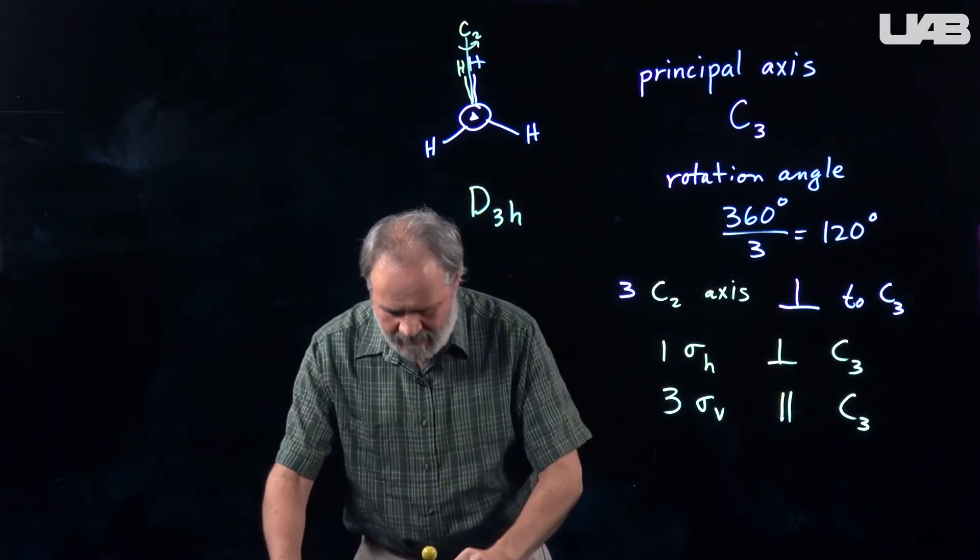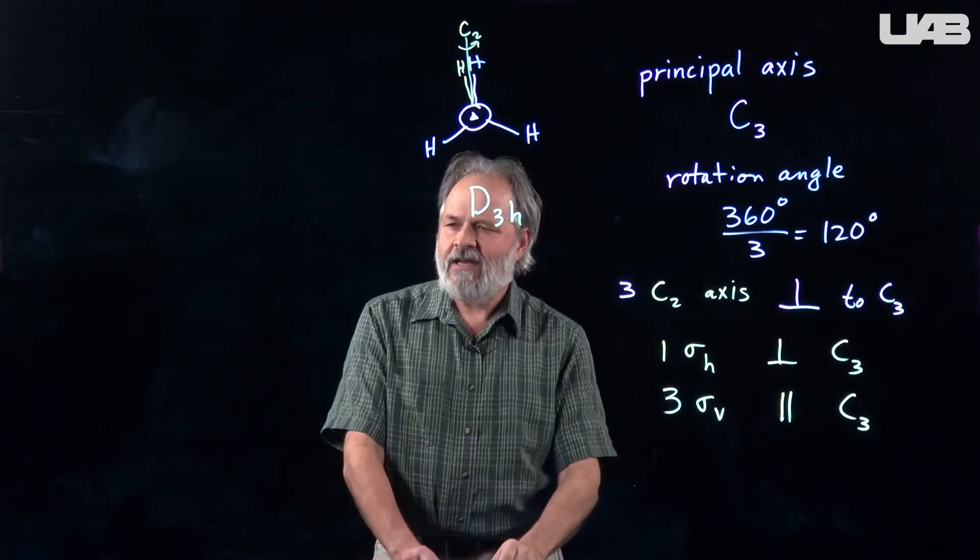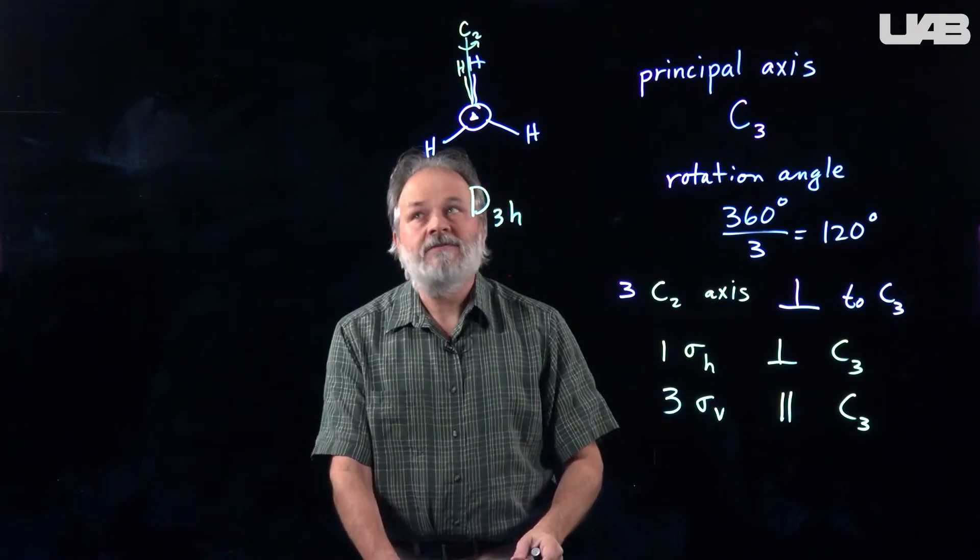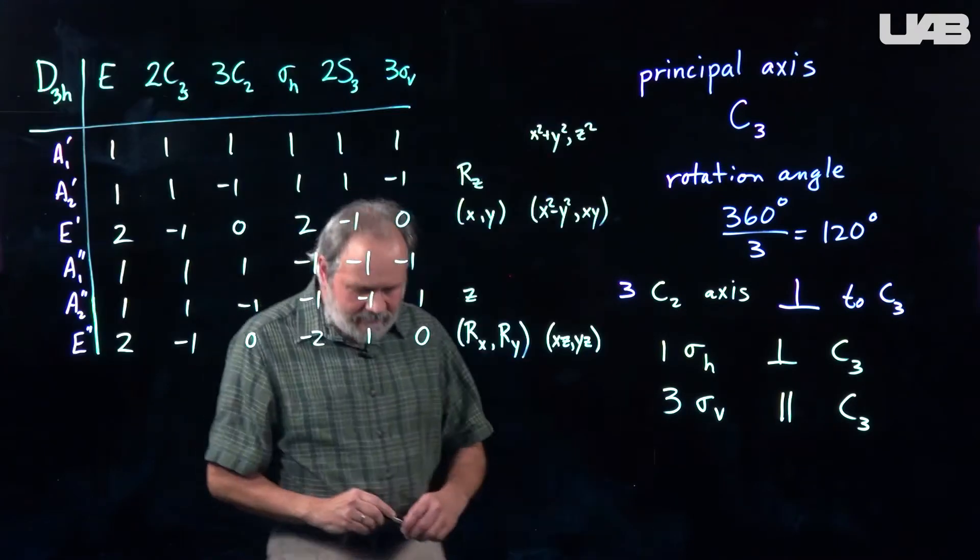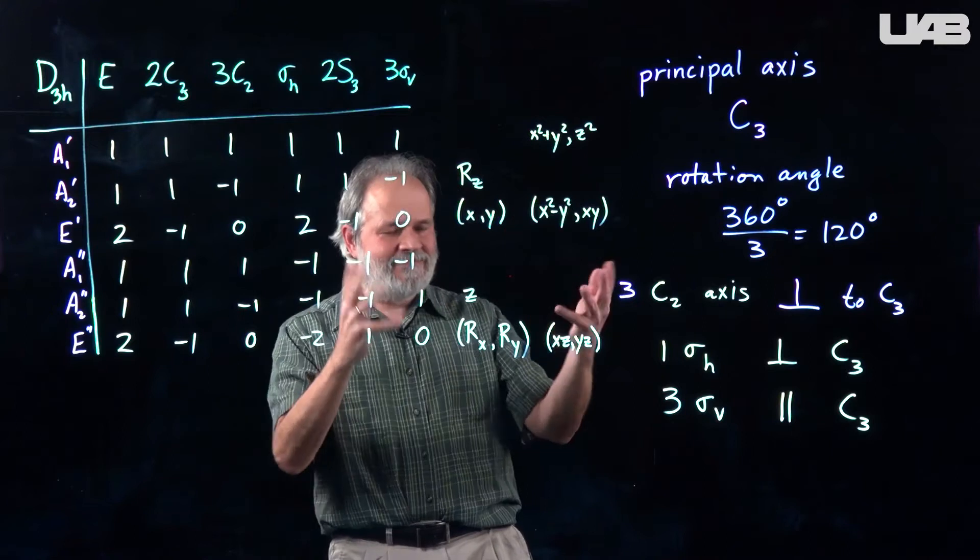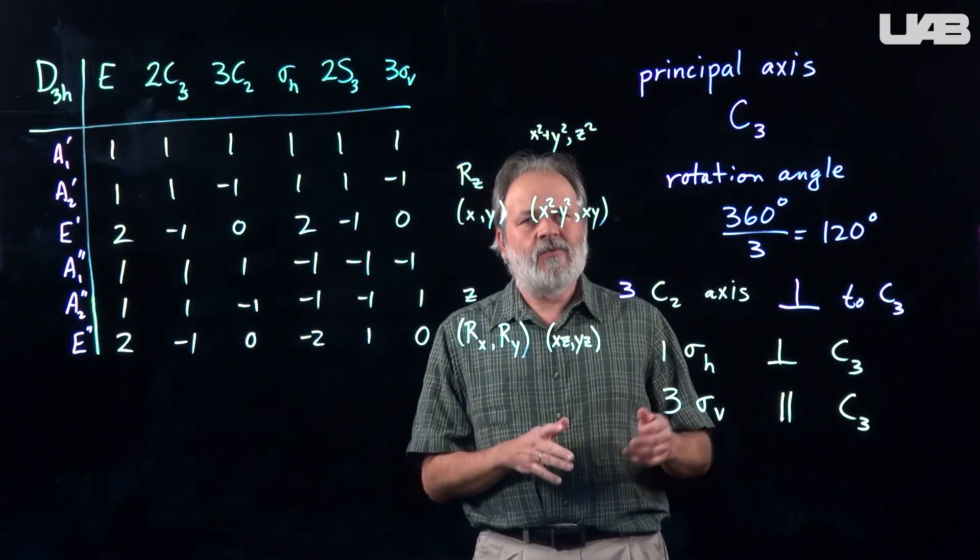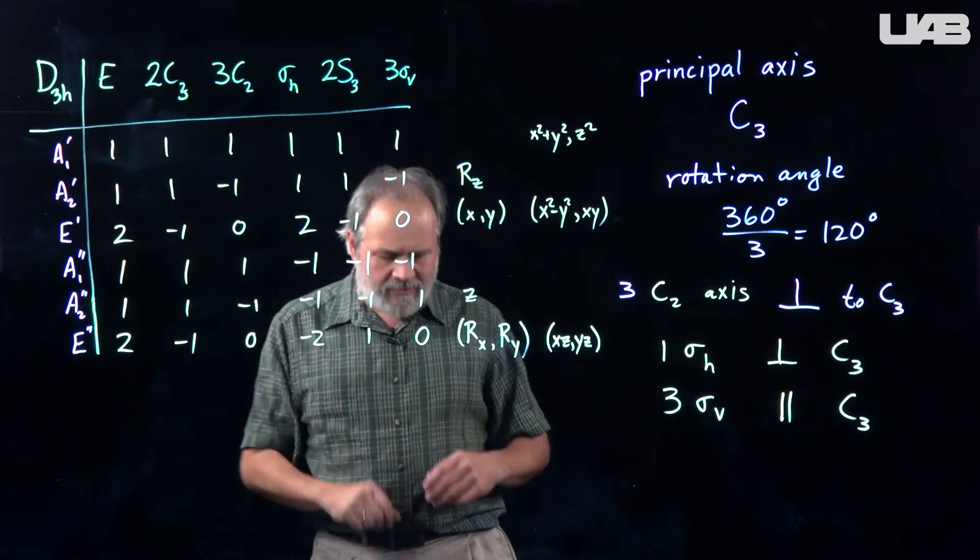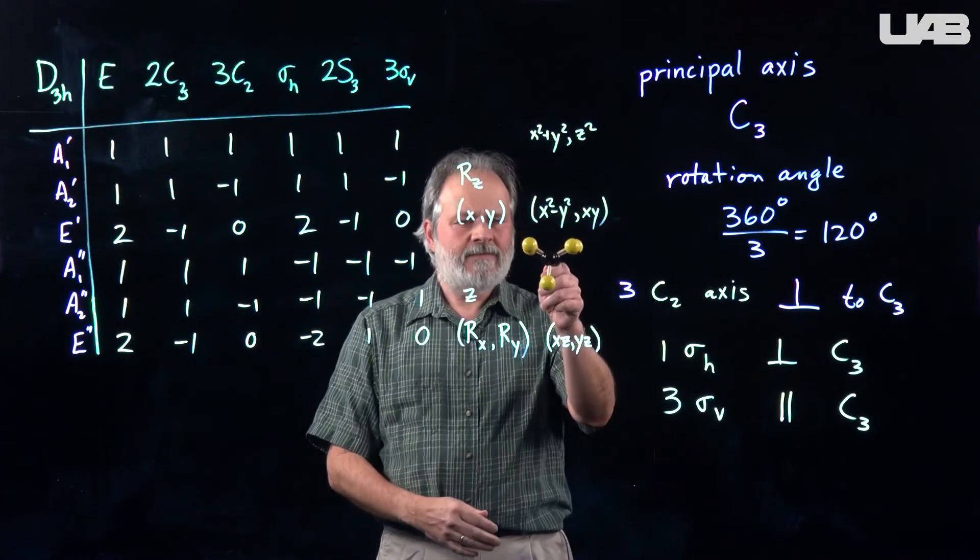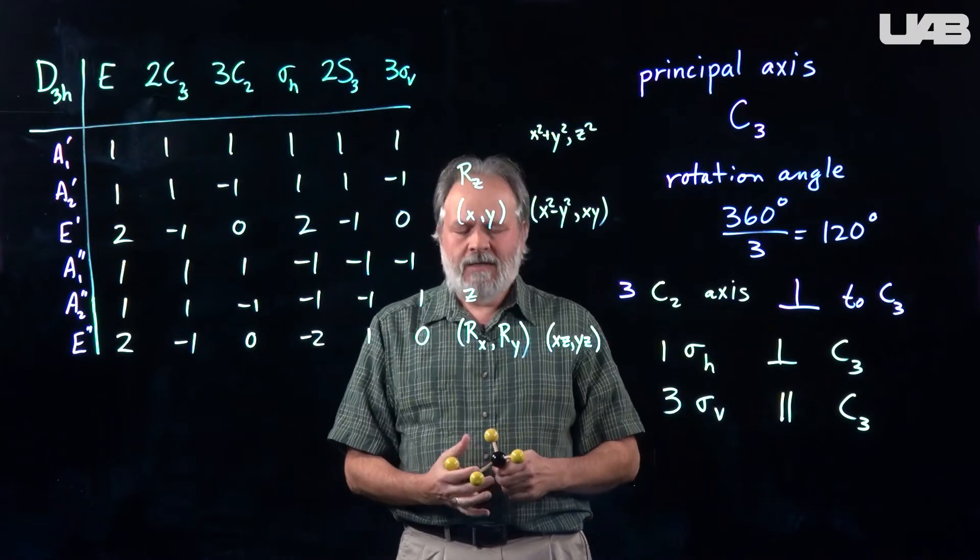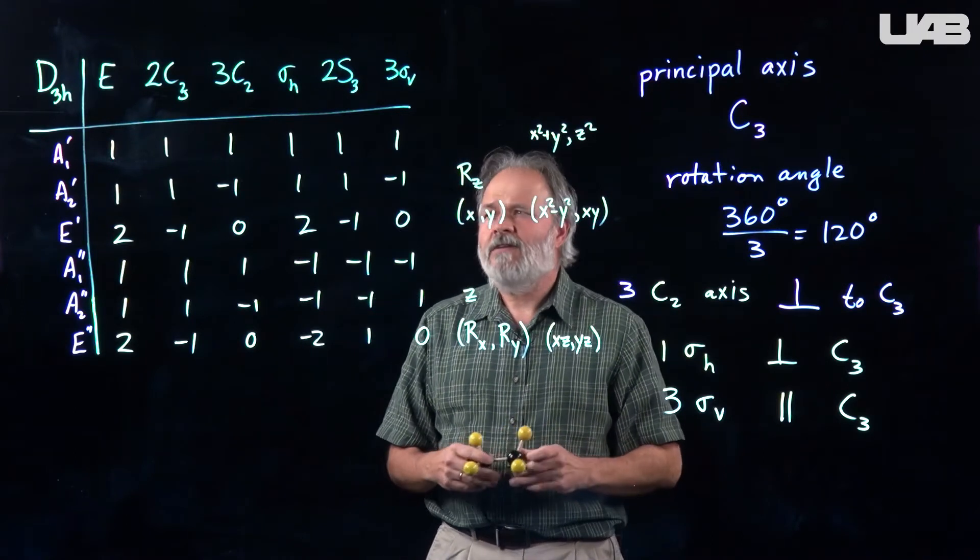So that's the name of this. And we're going to take a little break and actually put the character table for D3H up here. So now we'll resume. So we have identified the point group as D3H for eclipsed ethane. So let's look at something called the character table. And it will tell us some information about what symmetry elements are in the molecule.